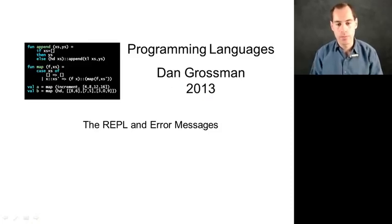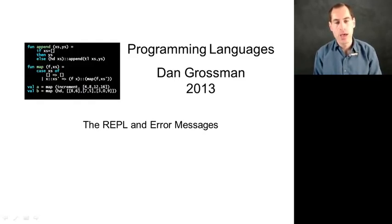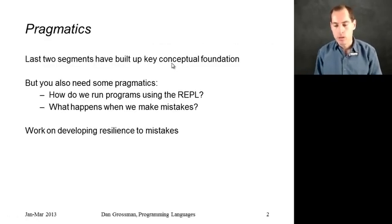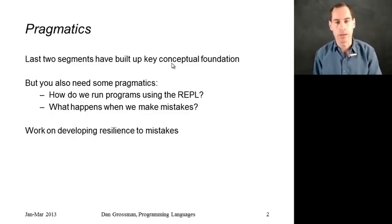In this segment I want to take a brief break from building up our conceptual framework for understanding ML to go through a couple more pragmatic topics: namely how to use the REPL, that read-eval-print loop, effectively, as well as how to deal with error messages and show you a bunch of examples of errors that are fairly common when starting to learn ML. We want to ask: how do we run programs using the REPL, and what happens when we make mistakes and how can we go about debugging those mistakes?